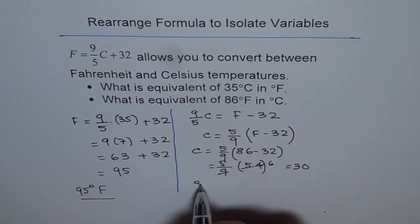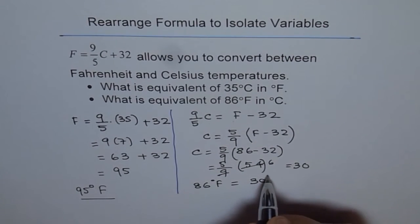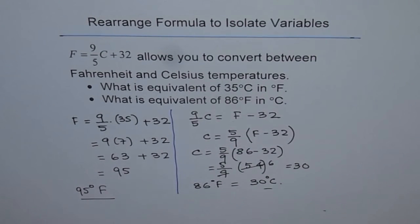And therefore, we can write that 86 degrees Fahrenheit is equal to 30 degrees centigrade. That is how we rearrange the formula and apply it to convert from one unit to another.